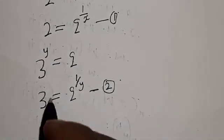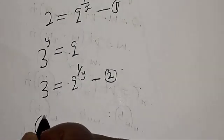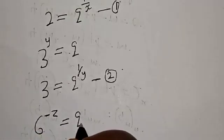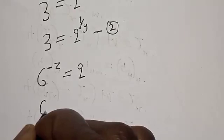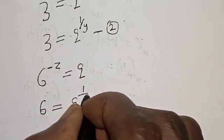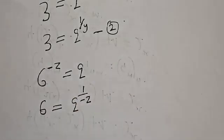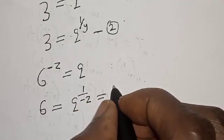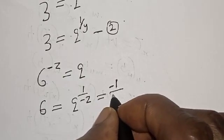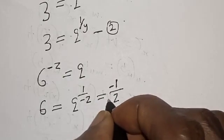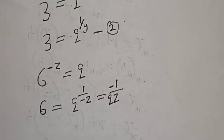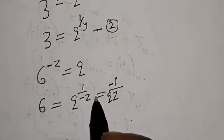Now we are left with 6 raised to power minus z is equal to Q, then 6 is equal to Q raised to power 1 over minus z, which is equal to Q raised to power minus 1 over z.